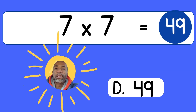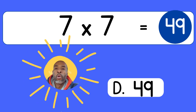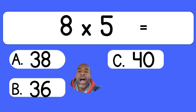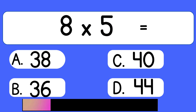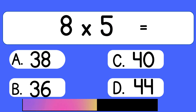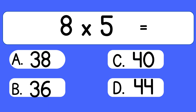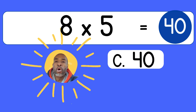7 times 7 equals 49. 8 times 5. 8 times 5 equals 40.